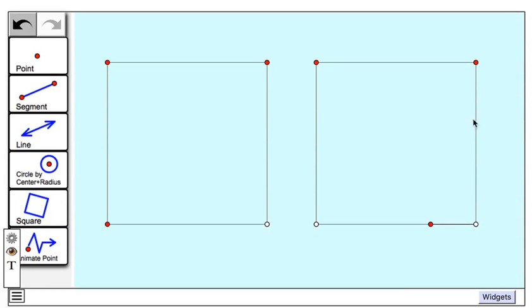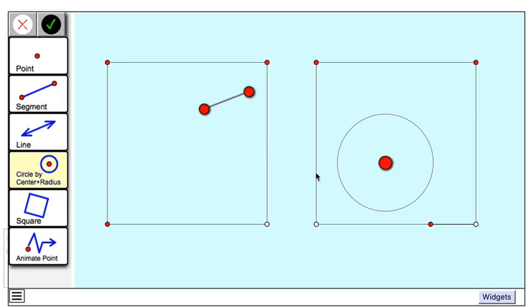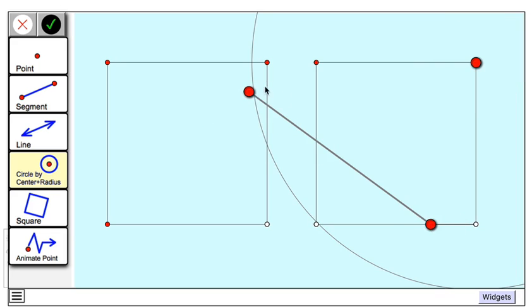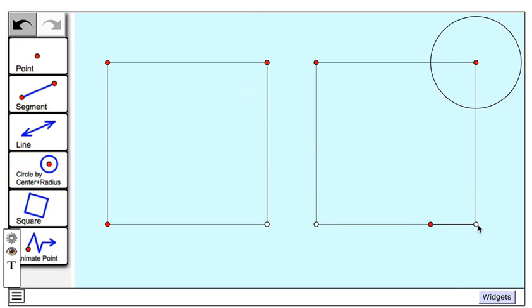So to find this point here that creates a segment of length equal to this segment, I'm going to use the circle by center and radius tool. When I tap on that, I see a preview of a circle and its radius. This segment determines the radius of this circle. I'm going to place the center of the circle right here at the vertex of my square, and I want the radius of the circle to be equal to the length of this segment. So I'm going to match this glowing endpoint to that point, and the other glowing endpoint to the other end of my segment.